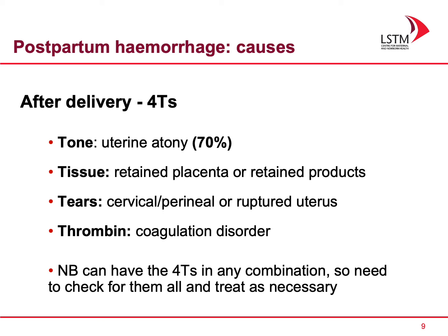Regarding PPH: the causes of primary postpartum haemorrhage are the four T's. Atony accounts for about 70% of cases. Then there are issues of retained tissue, any tears including ruptured uterus, and thrombin disorders — coagulation problems. Importantly, these T's do not always occur in isolation or follow a specific sequence. The fact that your patient has atony doesn't mean they cannot also have tears. Make sure you look out for all four T's.